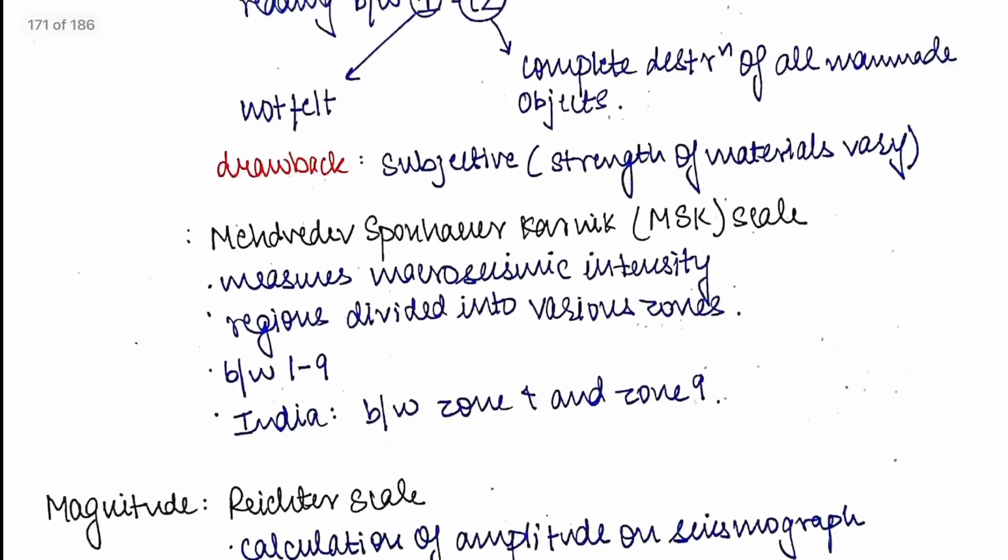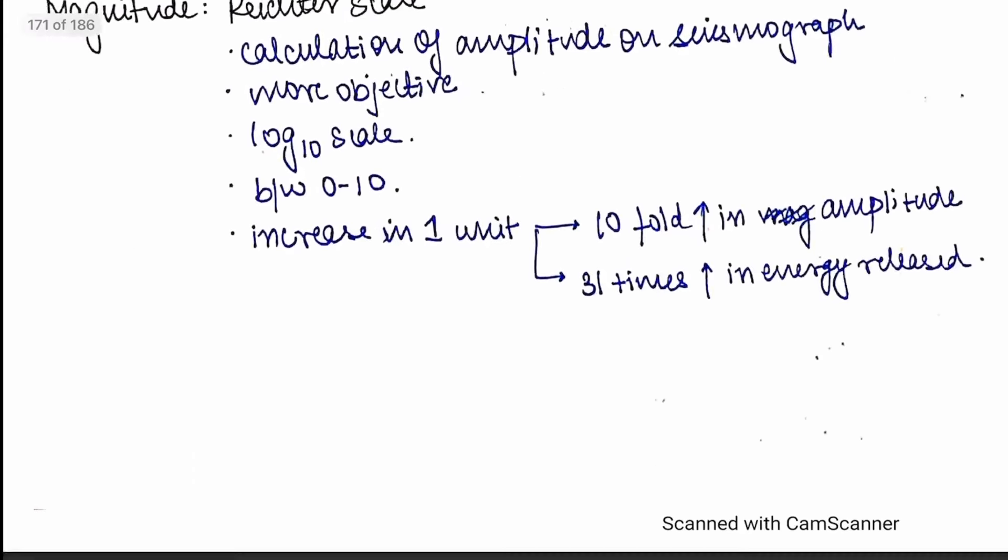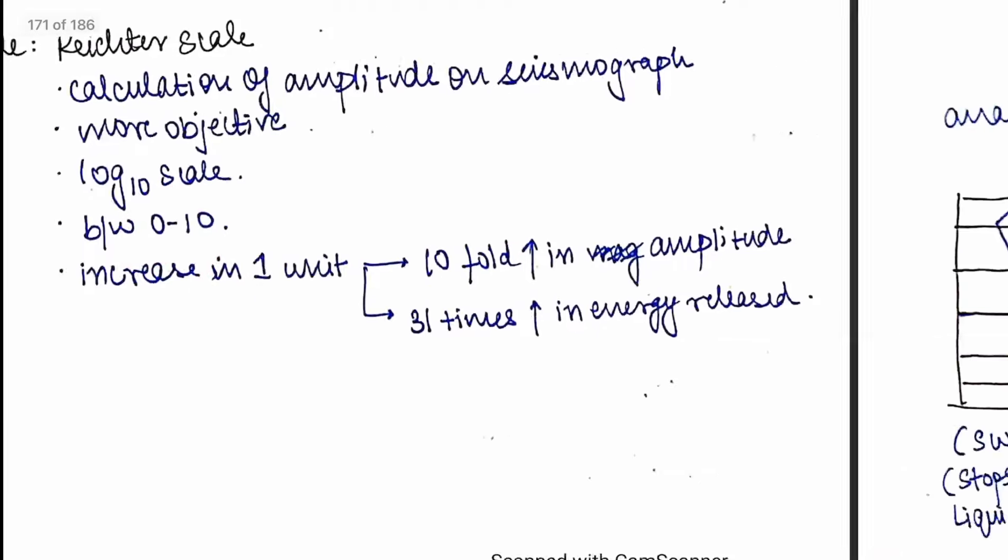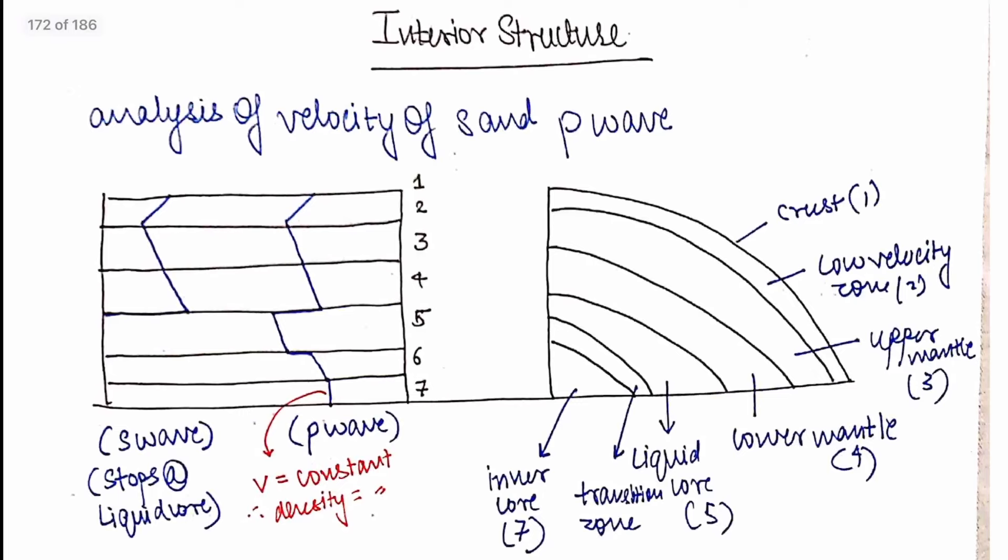Now let's talk about measurement of earthquake. This is also given in NCRT. Mercalli scale, Richter scale, and how they are different. Richter scale starts from zero and Mercalli scale starts from one. This is a very interesting question. If you know the answer write in the comments.